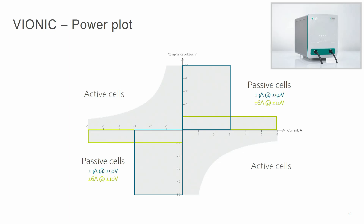The potentiostat Vionic can be set in two different operating modes. The first, framed in green, is the most common used operation mode because most electrochemical experiments can be performed with it. The maximum operation point is plus 10V compliance voltage at a maximum current of 6A. The second operating mode, framed in dark blue, is the high compliance mode, used when a compliance voltage above 10V is needed. The maximum operation point is plus 50V compliance voltage at a maximum current of 3A. This is sufficient for demanding experiments in the field of organic electrosynthesis.